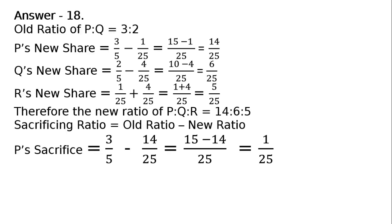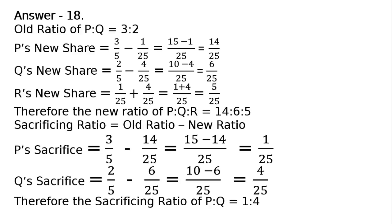Q's sacrifice is equal to 2/5 is the old share. Q's new share is 6/25, that is LCM 25. 5 into 2 is 10 minus 6, 4/25. Therefore the sacrificing ratio of P is to Q is equal to 1 is to 4.